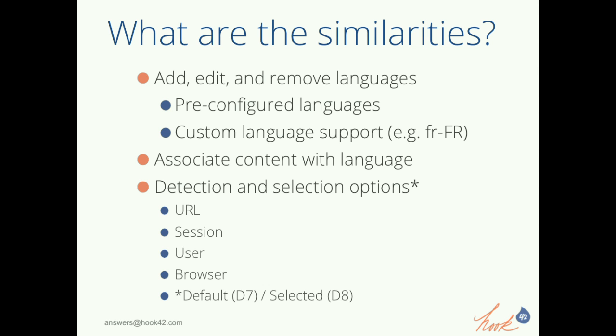You can also associate content with a language — a node in Spanish, a node in English, a node in German. There are things called detection and selection, which let Drupal know how to determine the language that should be shown. These are very similar conceptually between Drupal 7 and Drupal 8. You can detect based on URL, which is typically the most common, or based on a user session, the user object itself, or the browser, with a default language to fall back to.